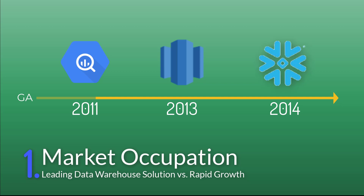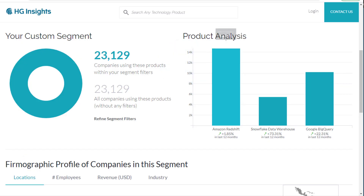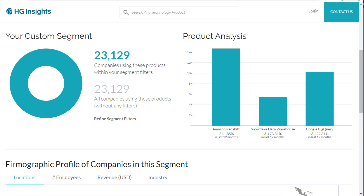AWS Redshift is based on the old version of PostgreSQL with changes to that version. An initial preview beta was released in November 2012, and the full release was made available on February 15, 2013. Snowflake has run on AWS since 2014, on Microsoft Azure since 2018, and on GCP since 2019. Both AWS Redshift and GCP BigQuery are Platform-as-a-Service (PaaS) solutions supported with querying using ANSI SQL. Snowflake is a Database-as-a-Service (SaaS) solution. At the time of this video, AWS Redshift is still the leading data warehouse cloud solution in the market, but Snowflake has grown significantly faster than the other two in the past 12 months.